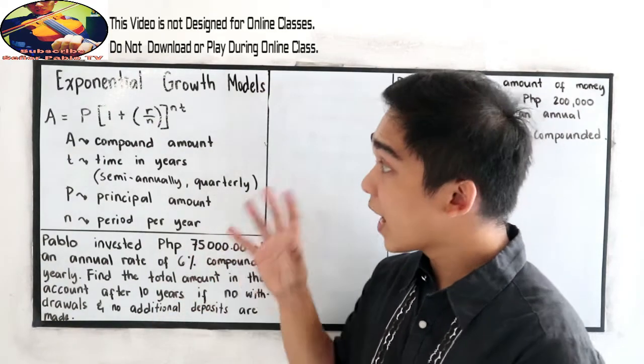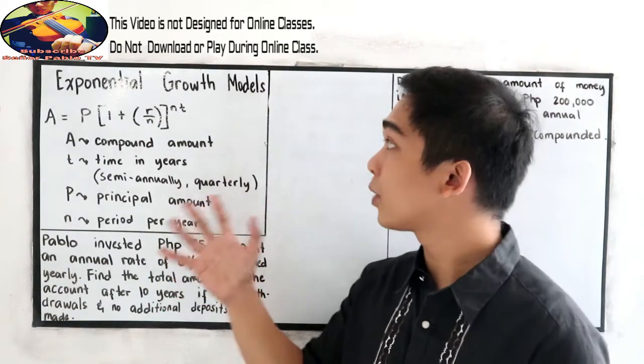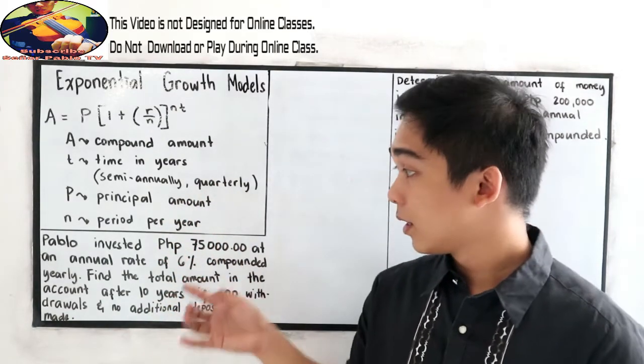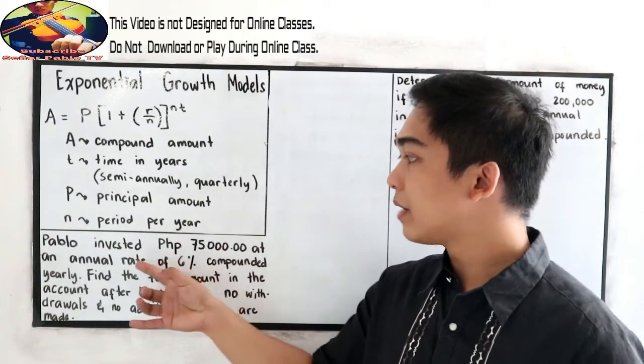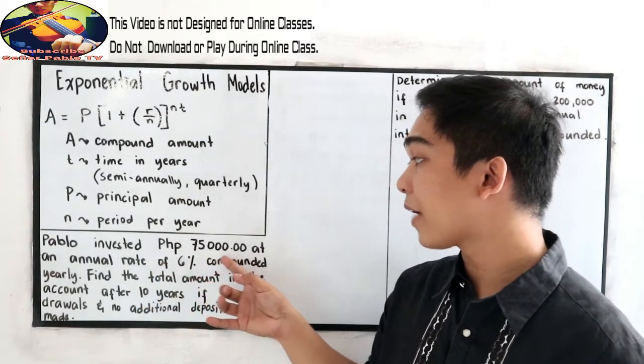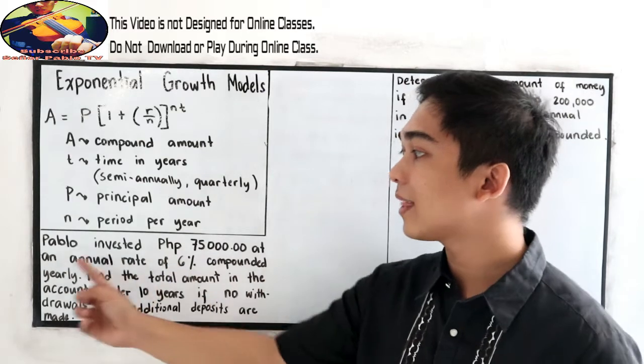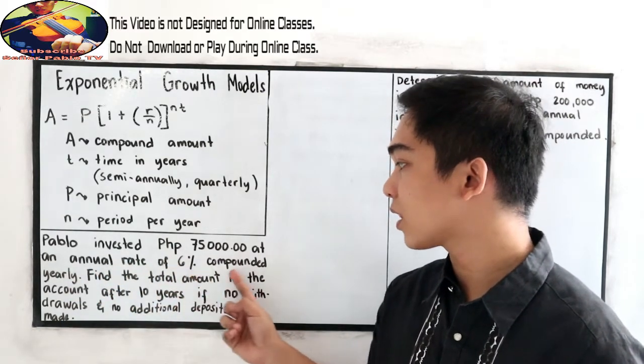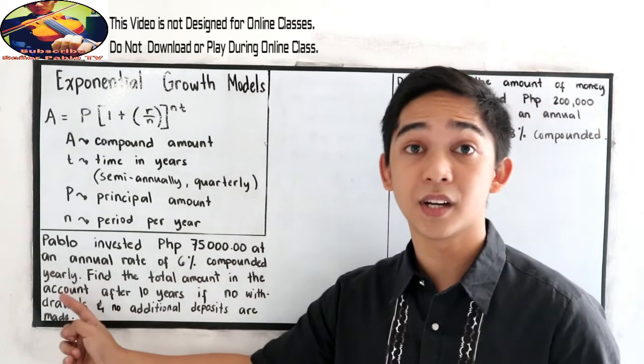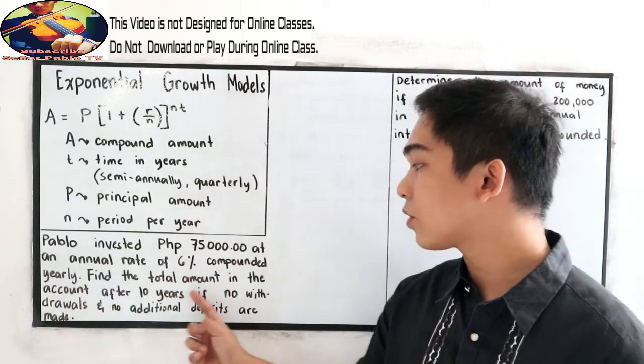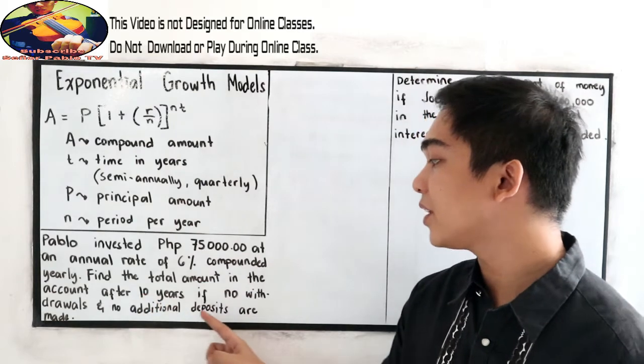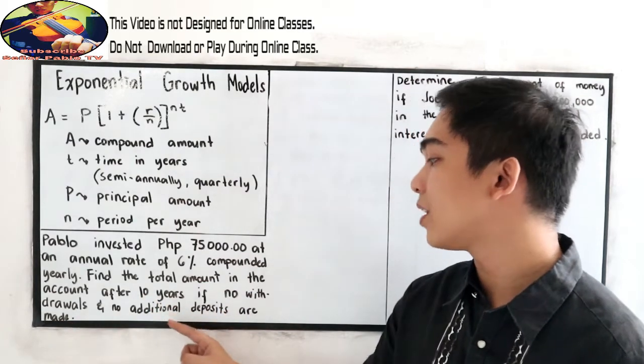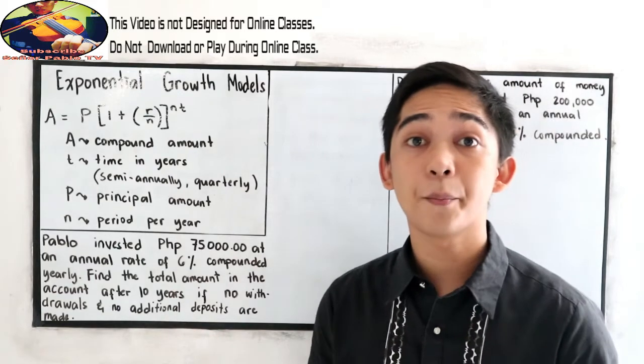To better understand our exponential growth model, let's have this example. Pablo invested $75,000 at an annual rate of 6% compounded yearly. Find the total amount in the account after 10 years if no withdrawals and no additional deposits are made.